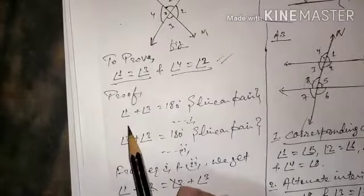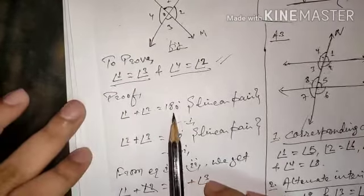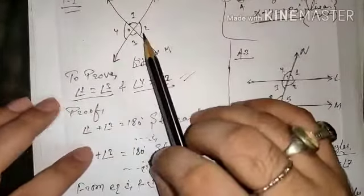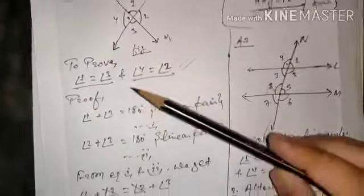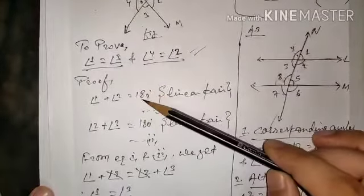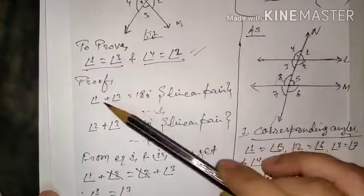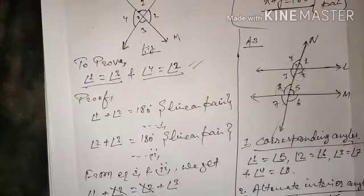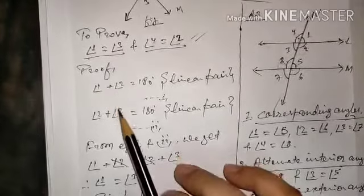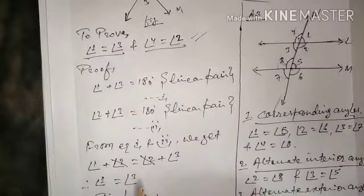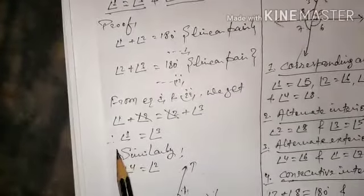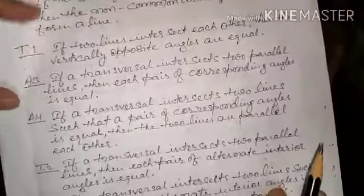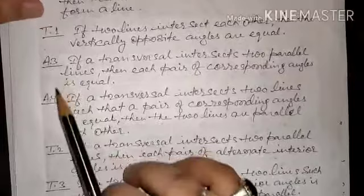The proof: angle 1 plus angle 2 equals 180 degrees, and angle 2 plus angle 3 equals 180 degrees — both are linear pairs. Since the RHS of both equations are equal, the LHS must also be equal, by Euclid's axiom that things equal to the same thing are equal to each other. Angle 2 cancels out, giving angle 1 equals angle 3. Similarly, angle 4 equals angle 2.